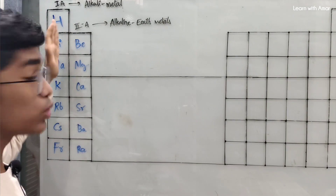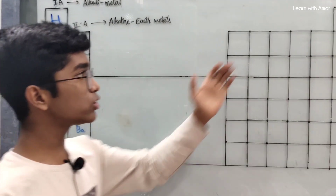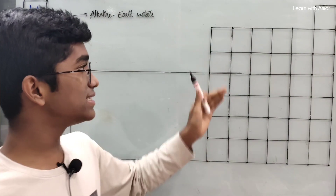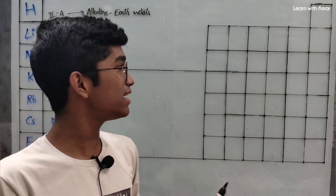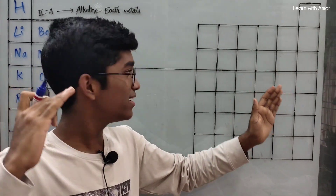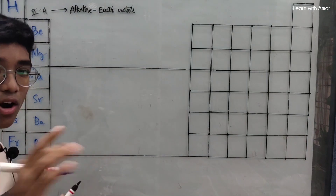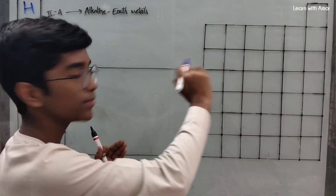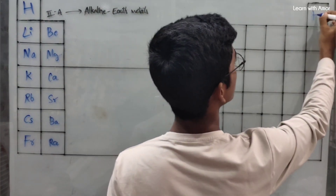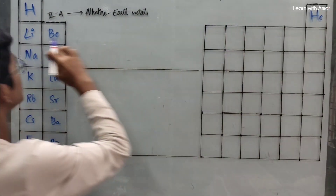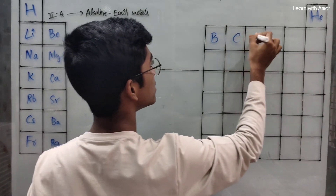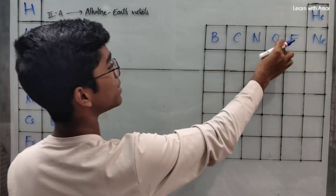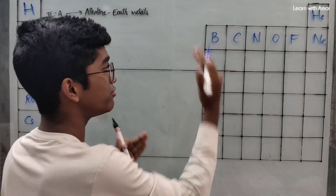These are the two groups present in the S block, so we have completed the S block elements. Moving on to P block. To remember the P block groups more easily and know which sentence belongs to which group, we note that the elements are numbered periodically — Hydrogen, Helium, Lithium, Beryllium, Boron, Carbon, Nitrogen, Oxygen, Fluorine, Neon. With these starting elements we can identify which sentence comes in which group.